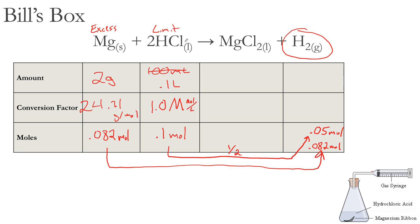Hydrochloric acid is limiting, and we know there would be excess metal still sitting in that flask, not totally consumed. To find how much gas we produce, we take that 0.05 moles and use the conversion factor for converting moles to liters: 22.4 liters per mole for any given gas at standard conditions. Multiplying 0.05 moles by 22.4 gives us 1.12 liters of hydrogen gas produced from that reaction.